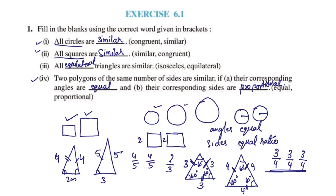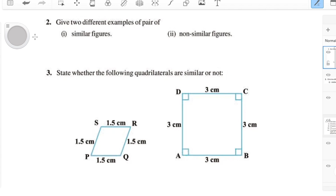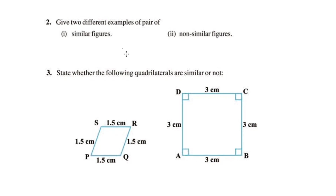The first, second, third, and fourth questions follow the same property. Equilateral triangles are similar. Two different examples of pairs of similar figures are: similar figures such as isosceles triangles.